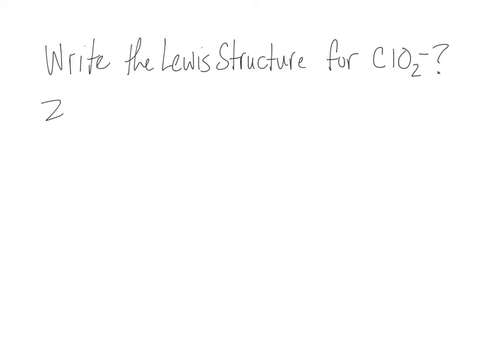This is one of the Lewis structures from the quiz you took the other day. You're supposed to write the Lewis structure for the chlorite ion. There are 20 electrons. I hope you added those up right.